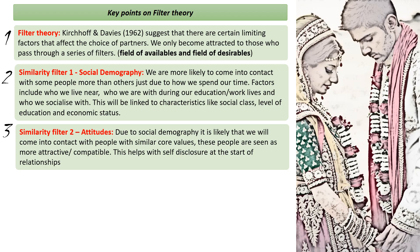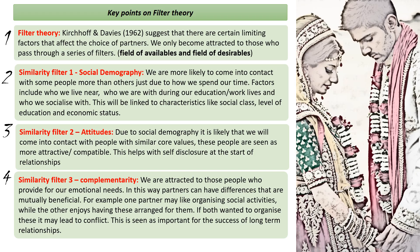Once someone's passed through the filter of attitudes, we come on to the third filter — complementarity. We need to be matched with those people who are going to provide for our emotional needs. These could be similarities — we might want a partner who's quite passionate like us — but complementarity can also work by looking for differences that are mutually beneficial. For example, one partner might really enjoy organising social activities while the other doesn't enjoy the organisation but really enjoys being a part of them. If both wanted to organise, it might lead to conflict. It's thought that while attitude similarities are important at the beginning of a relationship, complementarity is more important for the success of a long-term relationship.